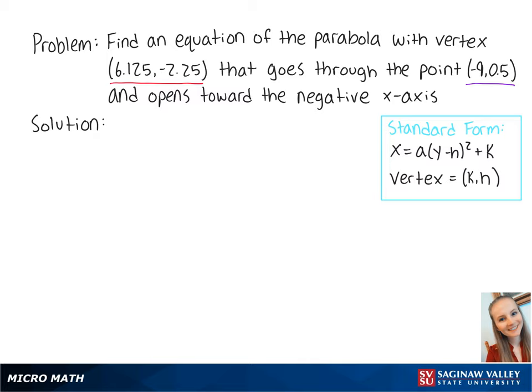Notice that the standard form is reversed because the equation is in terms of y. When we plug in the coordinates of the vertex, we get x = a(y + 2.25)² + 6.125.